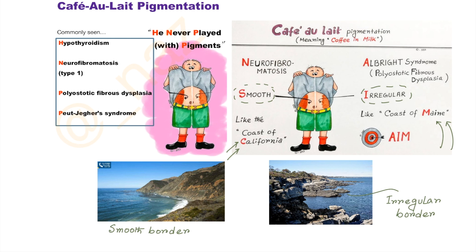You can remember this point with a simple mnemonic: MAIM. A for Albright, I for irregular, and M for Maine.